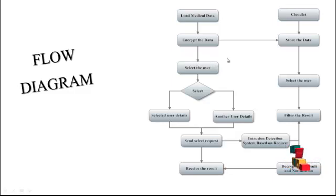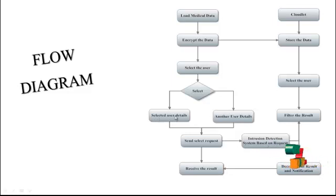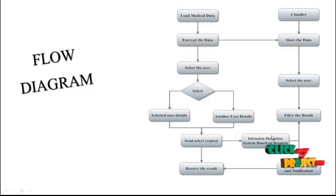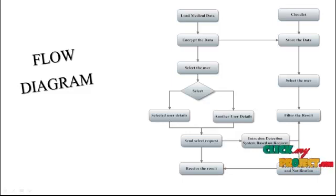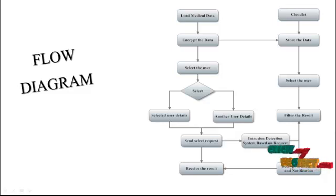Next, select the user and view user details or another user's details. The other user details are shared via the cloud load for protection. When a user selects user details, a request is sent to the cloud load. The cloud load processes the request and selects the other user details.